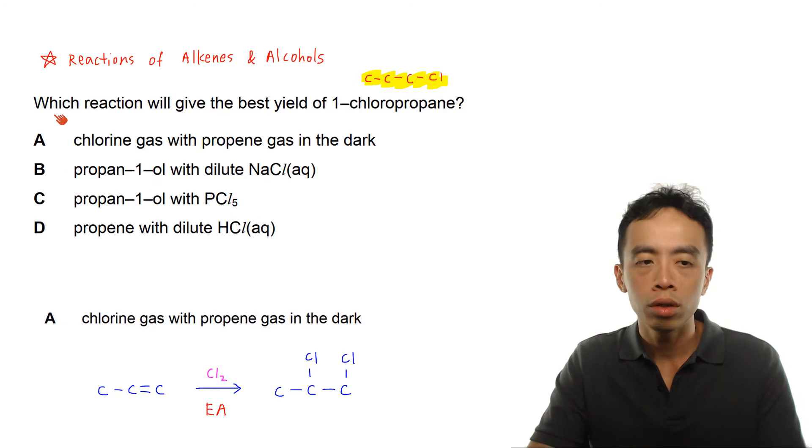Now in this video we want to go through an exercise involving the reactions of alkenes and alcohols. Let's take a look at this question: which reaction will give the best yield of 1-chloropropane?